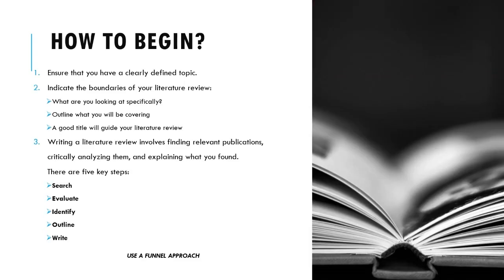How do you begin? Before you start searching, ensure you have a clearly defined topic. Your research title tells you what your research topic is, and your title, aims, objectives, and research questions are all interlinked. Indicate the boundaries of your literature review — what are you looking at specifically? Outline what you will be covering based on your title and aims and objectives. A good title will guide your literature review.